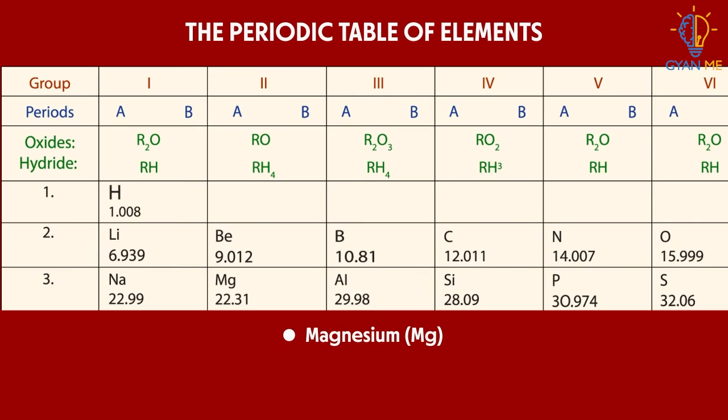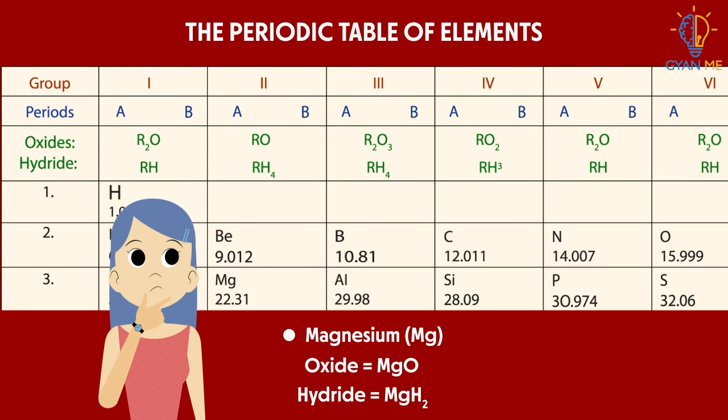He then took the element magnesium, whose oxides are MgO and hydride is MgH2. Can you tell me where should it be placed?